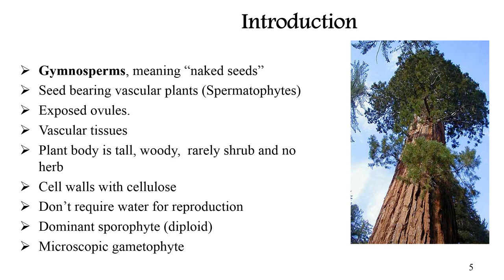Seed-bearing vascular plants are also called spermatophytes. Seeds are the reproductive part of the plant and contain the plant embryo and stored food. Gymnosperms have exposed ovules because the seeds of gymnosperms lack a protective enclosure. They have a well-developed vascular system. The plant body is tall and woody; some are shrubs like Ephedra, and they have no herbs. The cell wall is made up of cellulose. Unlike ferns, they do not require water for reproduction.